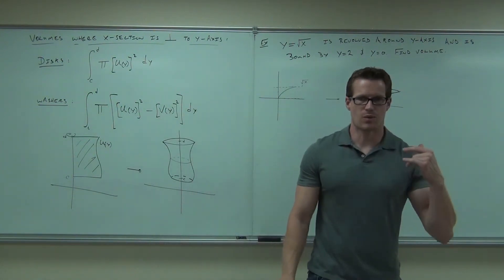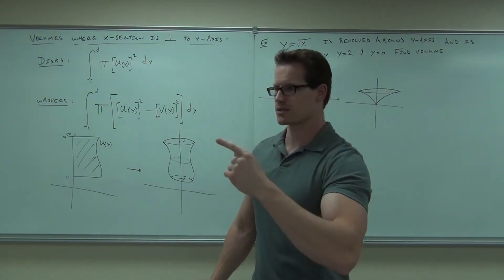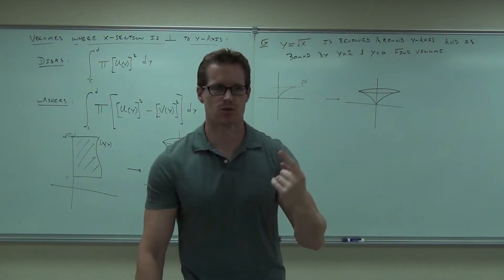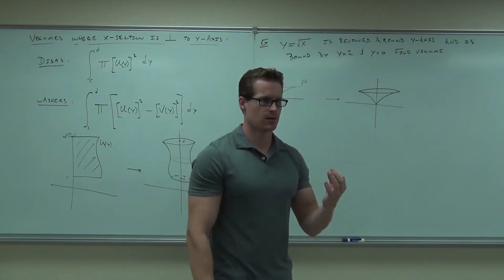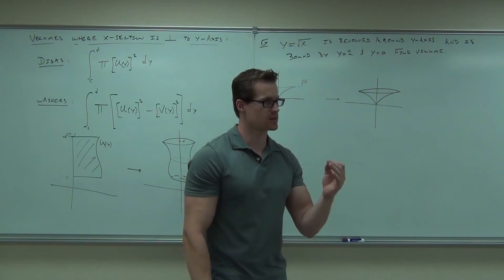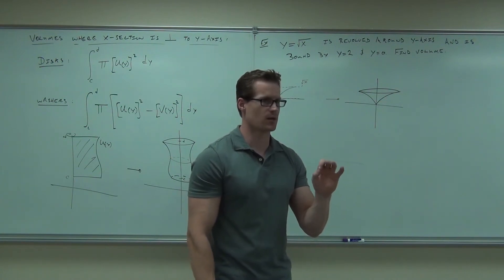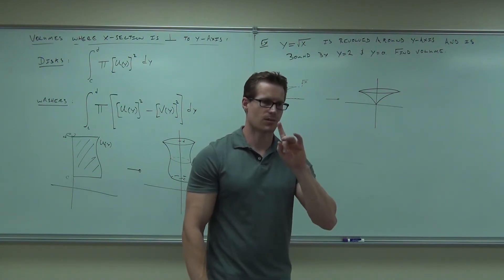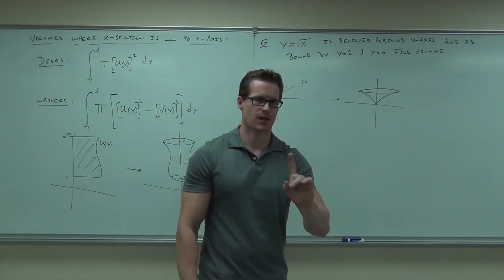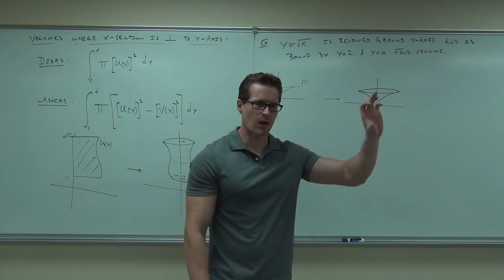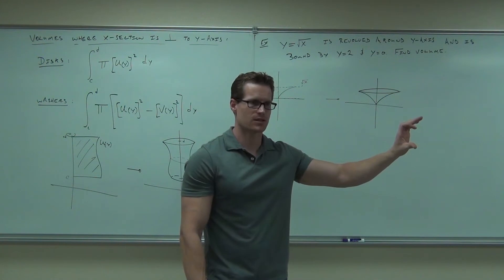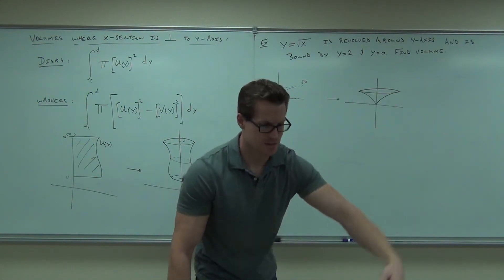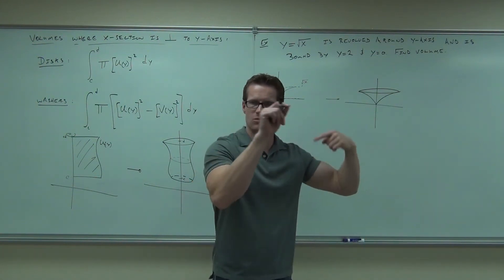When you're revolving things around the y axis, you need to have them in terms of y. Which means you need to solve for x. Don't let that confuse you. I'll say it one more time. When you're revolving around the y axis, it's got to be x equals y, y, y, y, y, y, y. Does that make sense? When you're revolving around the x axis, you had y equals something in terms of x. That's what we did.